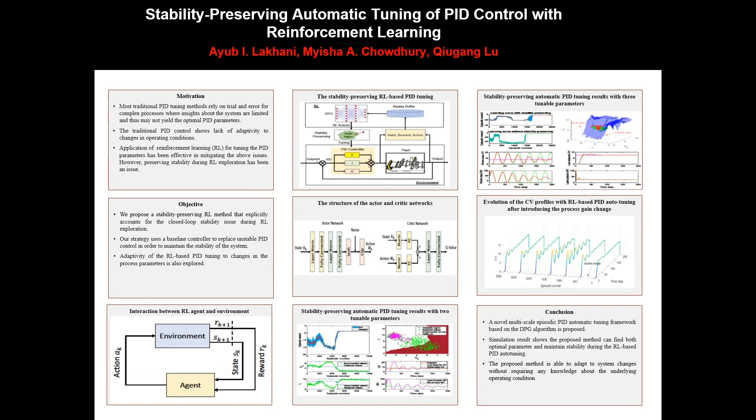PID controller is one of the most dominant types of controller available in process industries. However, there are some roadblocks for PID application. First, the control performance of PID strictly relies on the selection of its parameters. Despite the fact that some guidelines are available for tuning PID control even for complex systems, the resultant PID parameters may not be the optimal values. Second, the parameters of a traditional PID controller generally remain fixed after tuning, and when there is a change in the system, it lacks adaptivity.